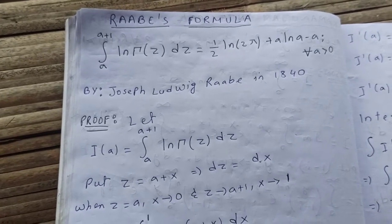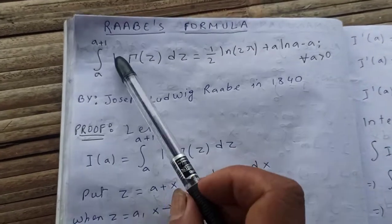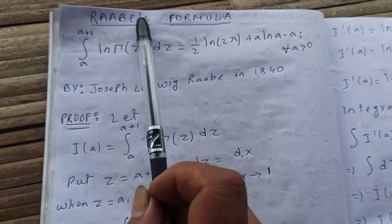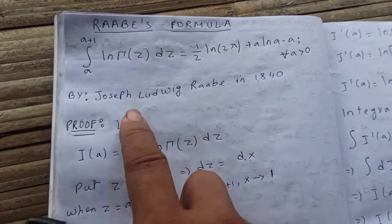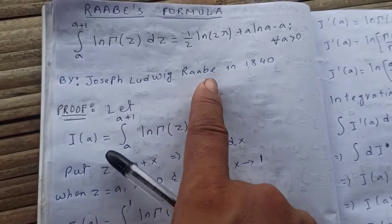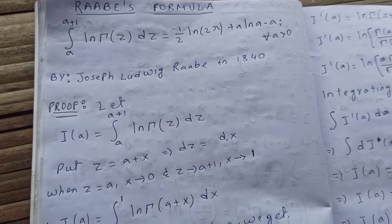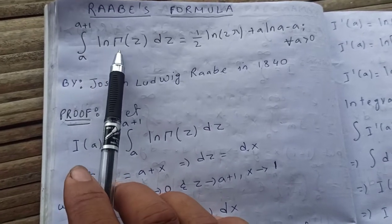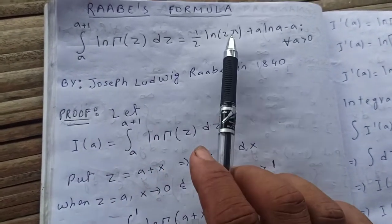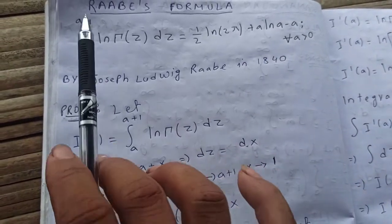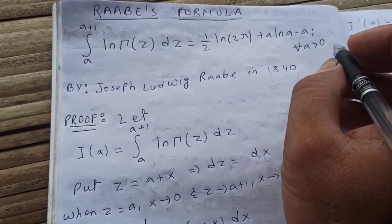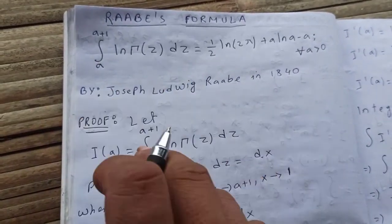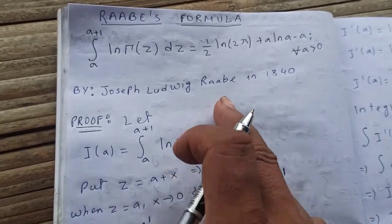Hello guys, thanks for watching my video. Today let's prove this formula — the Raabe formula. This is a scientist name: Joseph Lowitz Raabe, okay, in 1840. His formula states that the integral from a to a plus one of log gamma(z) dz equals one-half log(2π) plus a·log(a) minus a, where a is greater than zero.